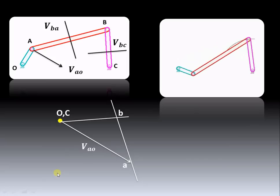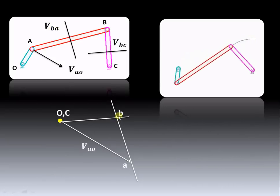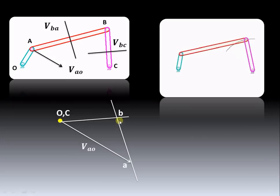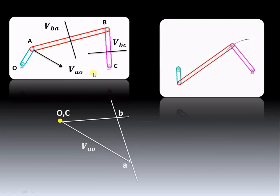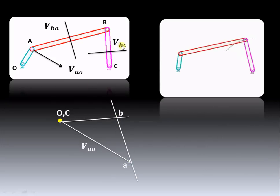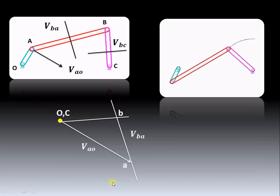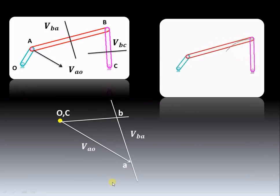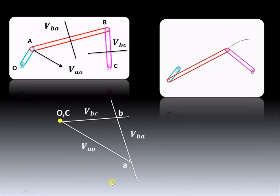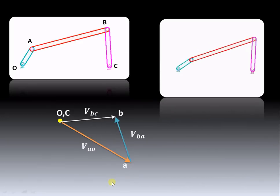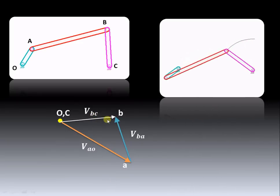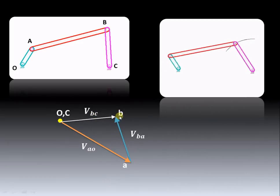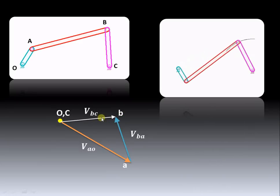Since we are finding velocity of B with respect to A, the arrow must be towards B. Similarly, for velocity of B with respect to C, the arrow must also be towards B. You can see that both arrows are directed towards B — and this completes the velocity triangle for this particular four-bar mechanism.